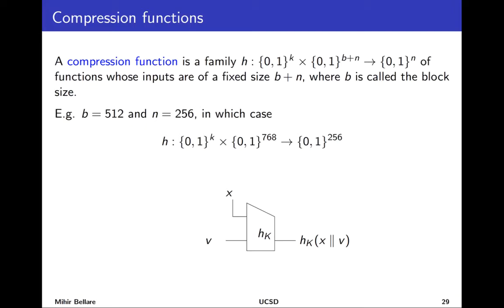Particularly, you're not allowed to keep anything secret — there's no secret key. There is a key, but it's known to the adversary. So we gave definitions and examples, and we're now going to look more at how hash functions are designed in practice. We saw SHA-256 as an example, and at its core was something we called a compression function — that compression step is our starting point.